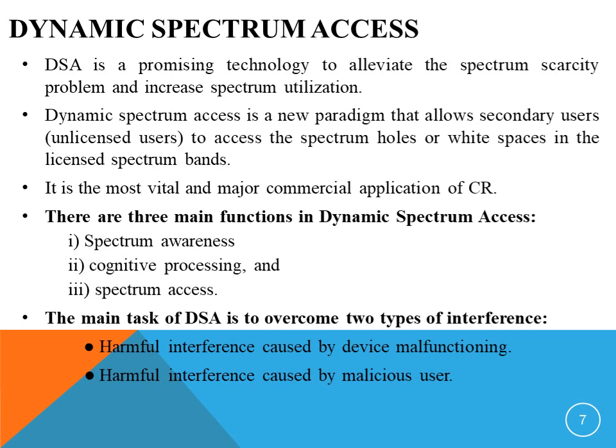Dynamic spectrum access is a promising technology to alleviate the spectrum scarcity problem and to increase the utilization of the spectrum. It is a new paradigm that allows the secondary users to access the spectrum holes, and is a major application of cognitive radio. There are three main functions in dynamic spectrum access: spectrum awareness, cognitive processing, and spectrum access. The first creates awareness about the RF environment, the second gives intelligence and decision-making functions performing sub-tasks like learning and designing, and the third gives the access policies which can manage interferences for co-existence of the secondary user.